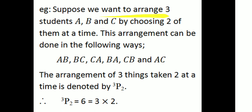For example, suppose we want to arrange three students A, B, and C by choosing two of them at a time. The arrangement of three things taken two at a time is denoted by 3P2. Therefore, 3P2 gives us 1, 2, 3, 4, 5, 6 — we have two students at a time, and the count is N1 into 2.